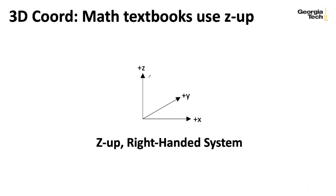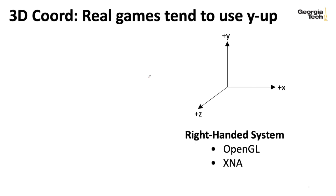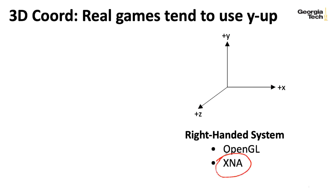In the realm of computer graphics, people often still use a right-handed system but with Y going up. Here your thumb points to the right, the index finger points upward, and the middle finger points towards you. The OpenGL API uses this, as well as the XNA framework developed by Microsoft for programming on the Xbox 360.